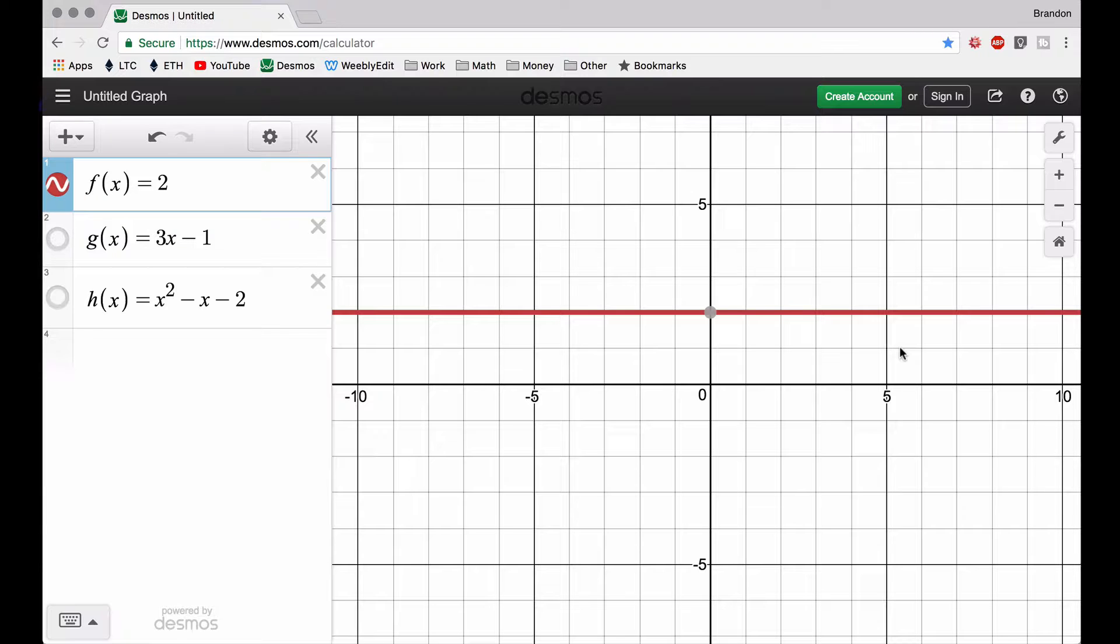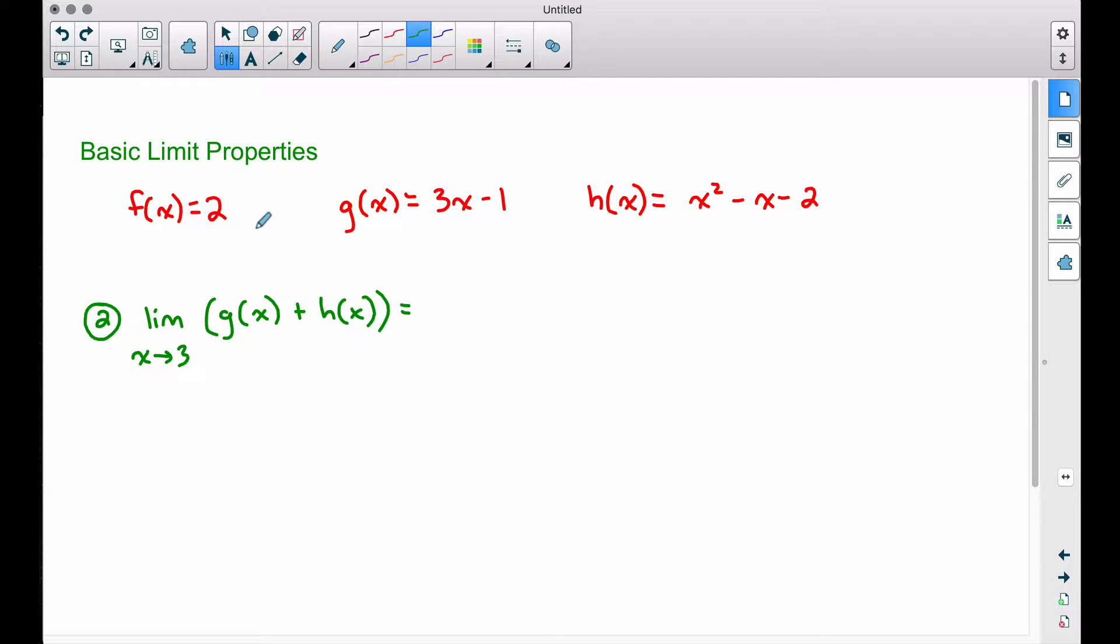In our second example, we have the limit of g of x plus h of x as x approaches three. Now this is a little overkill, but what you can do when you add two functions together and we're trying to find the limit, we can split this up into two pieces. So I can say the limit of g of x as x approaches three, this piece here, plus the limit of h of x as x approaches three. Yes, you can do this with limits, and now we can apply direct substitution to each individual function. Let's plug three into both of them, since that's what we were finding originally.